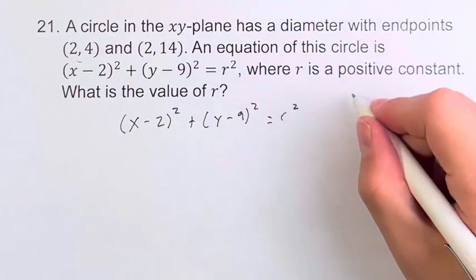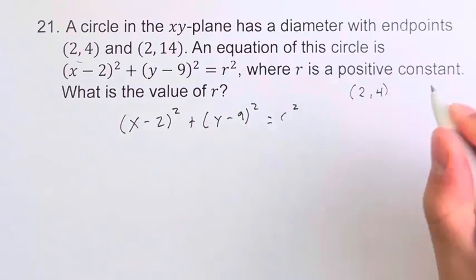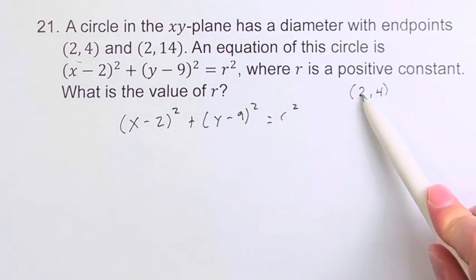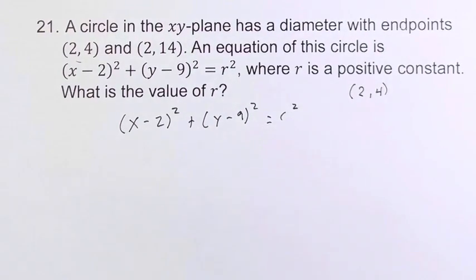Let's pick this point for example, the point (2,4). That means that if we plug in an x value of 2 and a y value of 4, we're going to get the correct value of r².